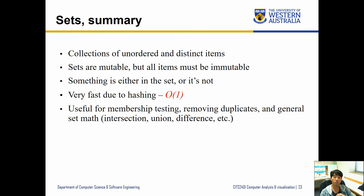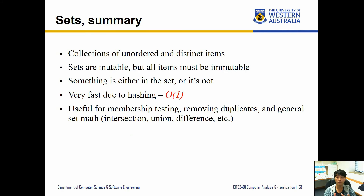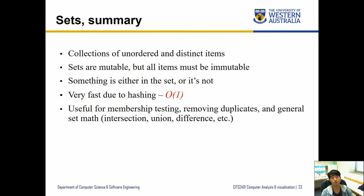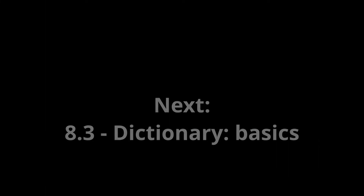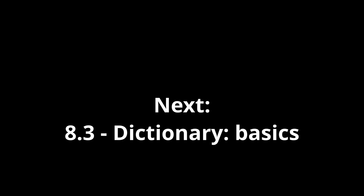To summarize: a set is a collection of unordered and distinct items, allowing fast membership lookup. Sets themselves are mutable, but the items inside cannot be mutable — they must be immutable. If you want to create sets of sets, use the 'frozenset()' function to convert a set into an immutable object. Sets are particularly useful for membership testing, removing duplicates, and general set math. That's it for this video — see you in the next one!